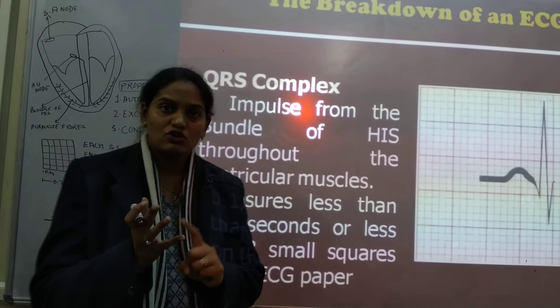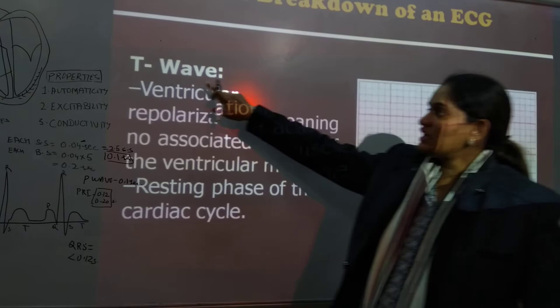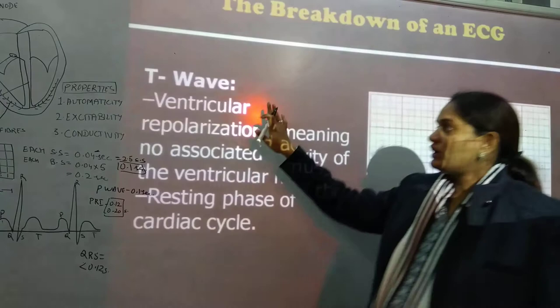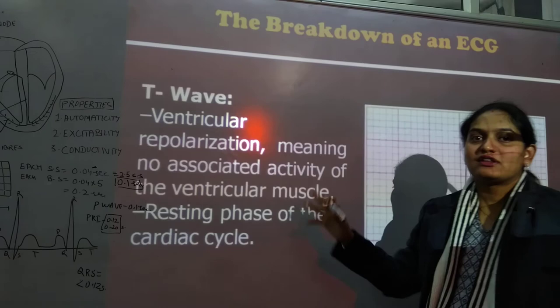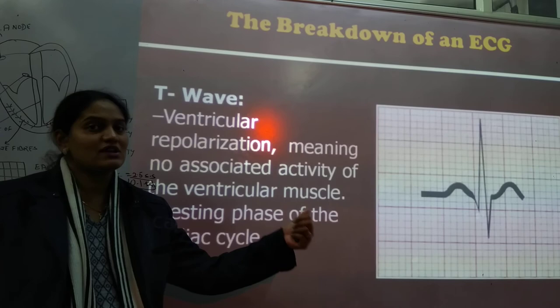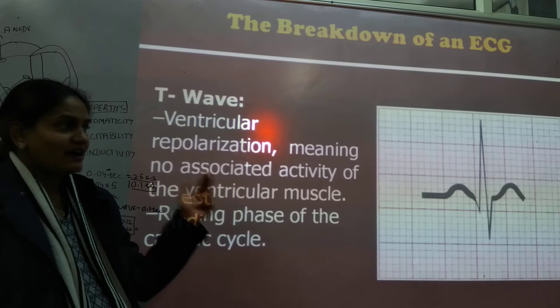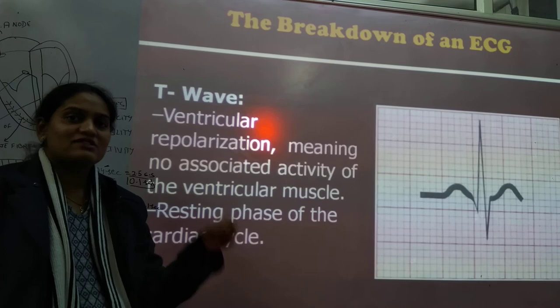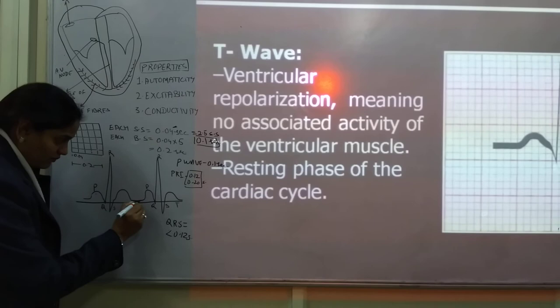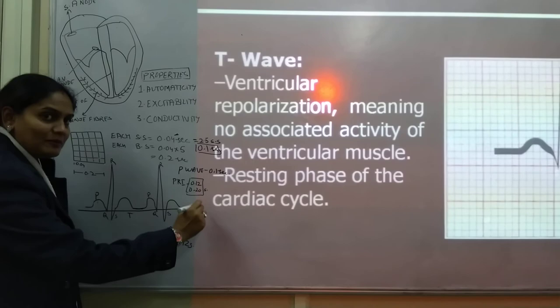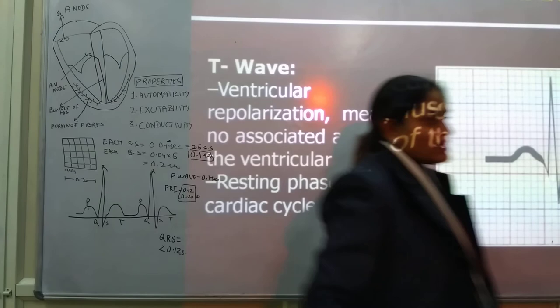Next we move to the T wave. The T wave gives us information regarding ventricular repolarization. There are two things: depolarization, which means contraction, and repolarization, which means no active contraction — the ventricles are relaxing and recharging for the next cardiac cycle. This relaxation is manifested by the T wave. After the T wave, we get an isoelectric line, and then a new P wave, new QRS, and new T wave cycle begins, repeating continuously.